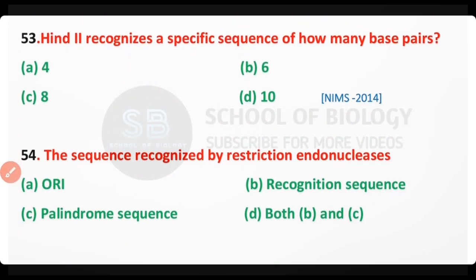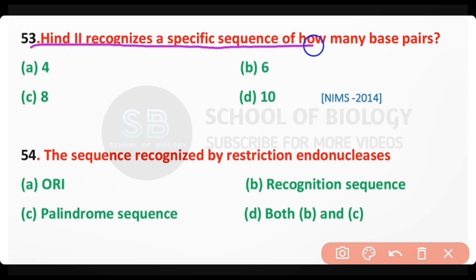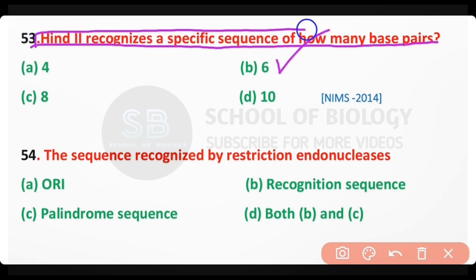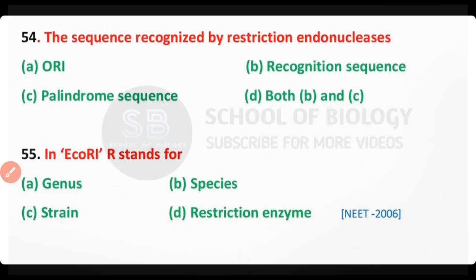Question number 53. HindII requires a specific sequence of how many base pairs — 4, 6, 8, or 10 base pairs? The correct answer is option B. HindII restriction enzyme requires a specific sequence of 6 base pairs.